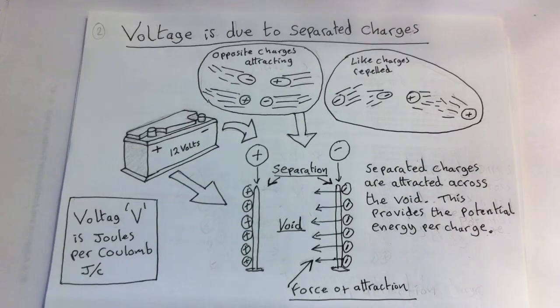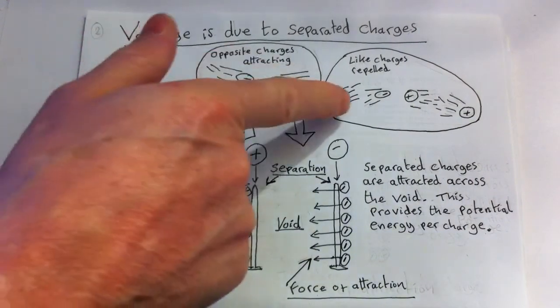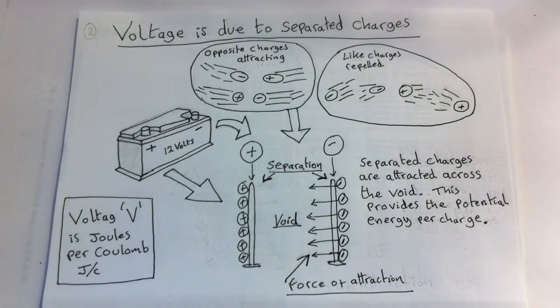In electrical circuits, we need to move not cars, but charges from A to B, which also requires a bit of energy or work done. Now, with charges, we have learned that opposites attract, while like charges repel, as shown here. Opposites attract, the like charges are repelling.